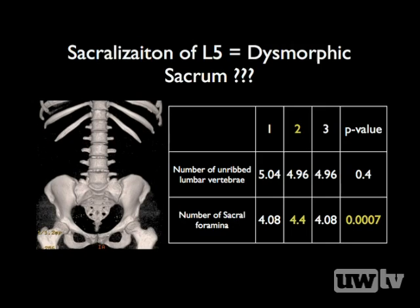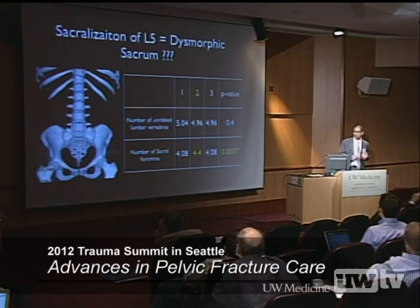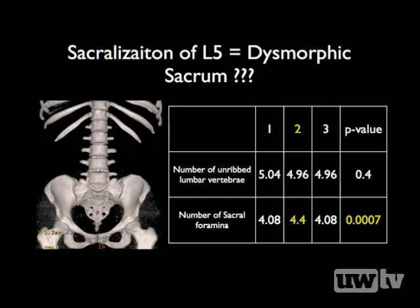One inclusion criterion was CT scans capturing the entire lumbar spine. Counting lumbar and sacral segments, we found that the number of un-ribbed lumbar vertebrae did not correlate with how patients clustered clinically. However, the number of sacral foramina tended to be higher in the cluster considered dysmorphic — those with long second sacral segment corridors and short, more obliquely oriented upper sacral segment corridors.